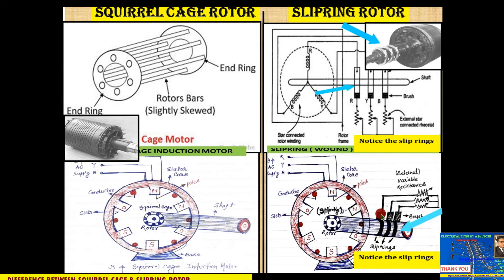The slip rings are made of bronze metal and are mounted on the shaft, insulated from it. Three carbon brushes are always in contact with the slip rings. Through these brushes and slip rings, external variable resistances are connected to the rotor circuit. This is the construction diagram showing both the squirrel cage and the slip ring motor arrangements.